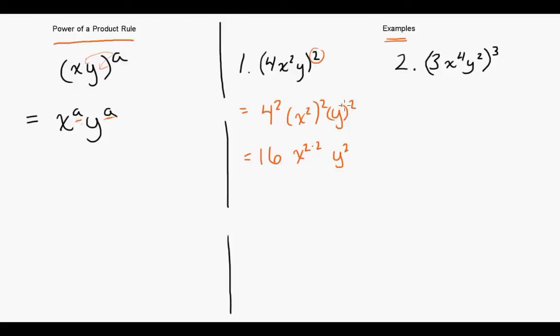So we're left with 16x to the 4th from the 2 times 2 and then y squared.